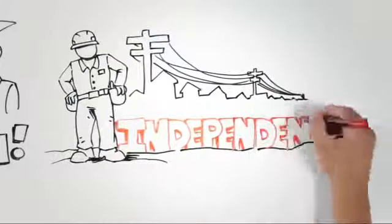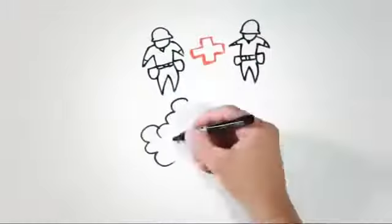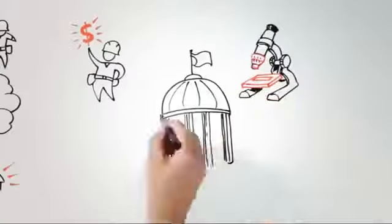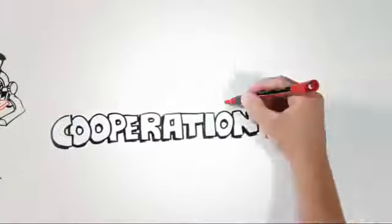But cooperatives also work together. They join forces to restore outages after storms, get financing, do research, and speak up in the halls of government. We call this hallowed principle cooperation among cooperatives. It's what makes us strong.